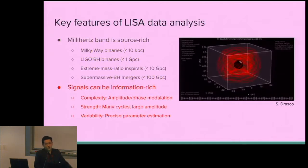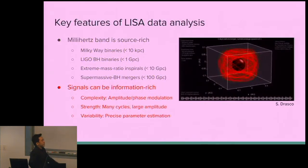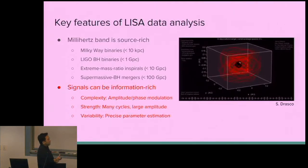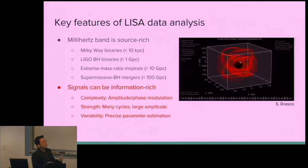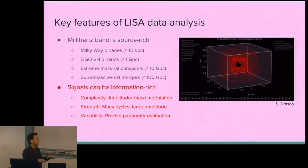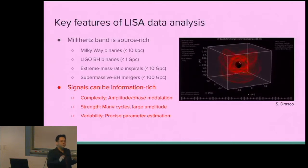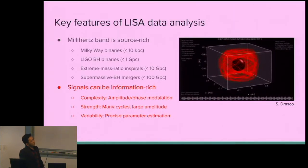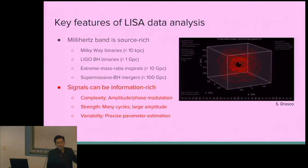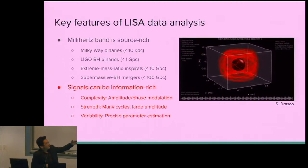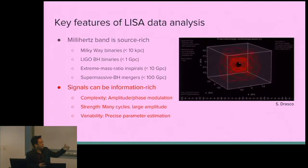Signals in the LISA band can be very complex — with high degrees of amplitude and phase modulation, many cycles, or large amplitude. The combination of these factors gives signals higher variability over parameter space, leading to very precise parameter estimation. As an example, a sped-up simulation of an EMRI shows just the final two months, but such sources can in general be observed across the full LISA mission lifetime of years, with a lot of phase information as the compact object spans many orbits in the strong field before plunging.